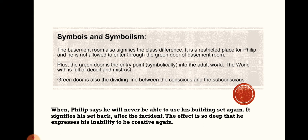The story is highly symbolic. The basement room signifies class difference — it is a restricted place for Philip, not allowed through the green door, as only servants are permitted there. The green door is symbolically the entry point into the adult world, full of deceit and mistrust, and also represents the dividing line between the conscious and the subconscious. When Philip says he will never be able to use his building set again, it signifies his setback — the effect is so deep he expresses his inability to create anything again.